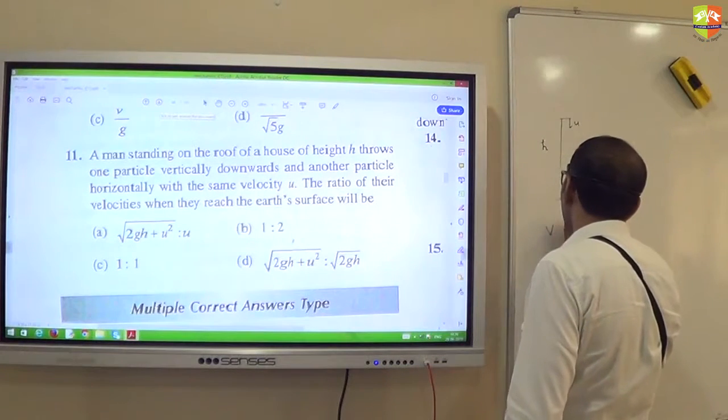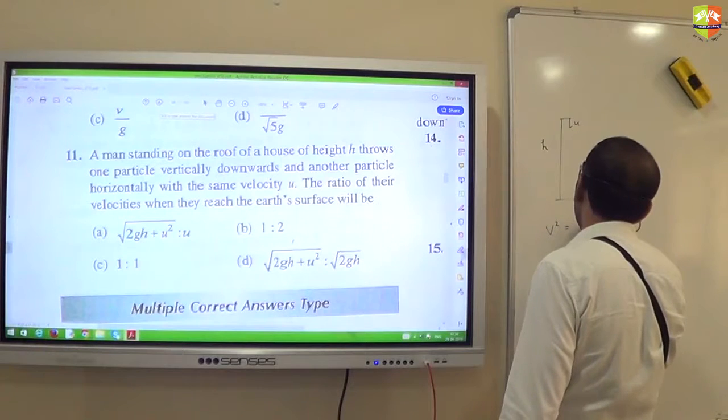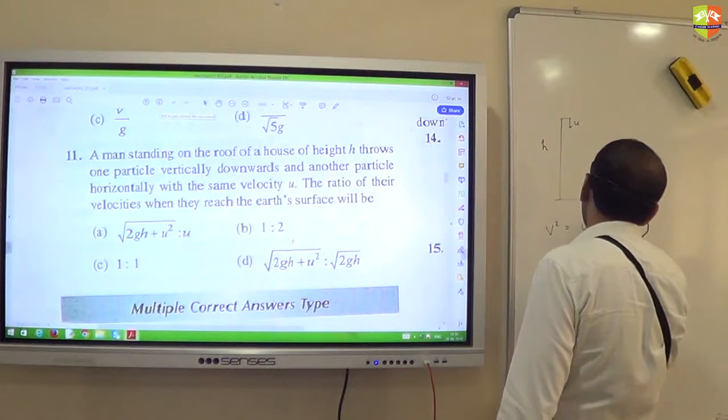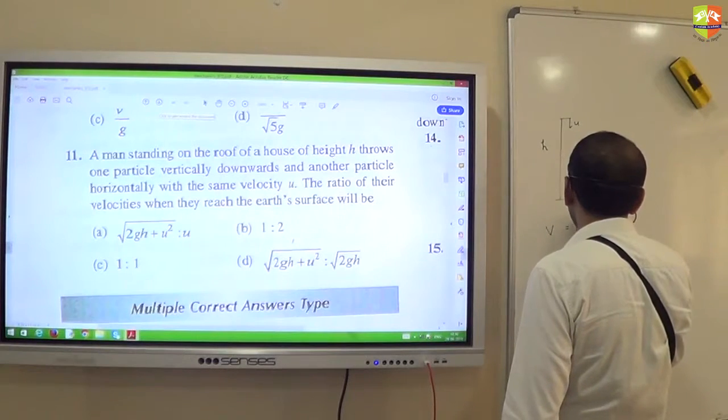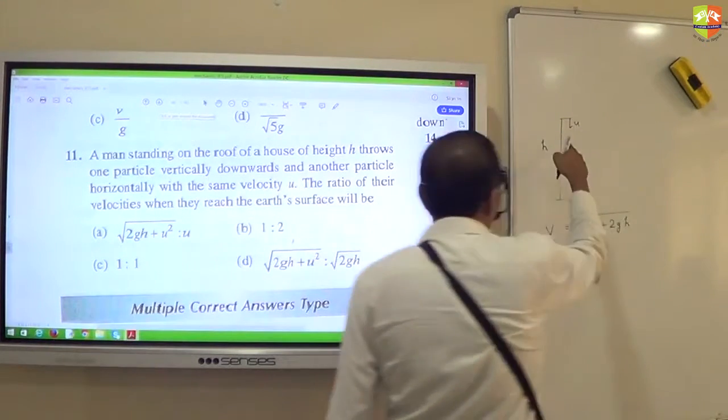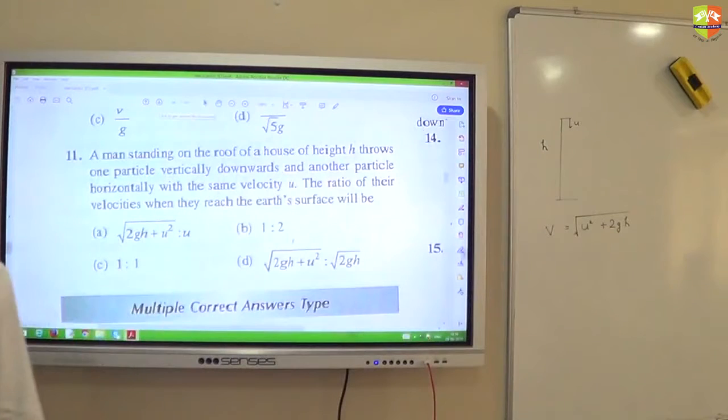So final velocity, v square equal to initial velocity u square plus 2gh. So velocity final will be this. In the case when you are throwing it down, final velocity will be root over u square plus 2gh.